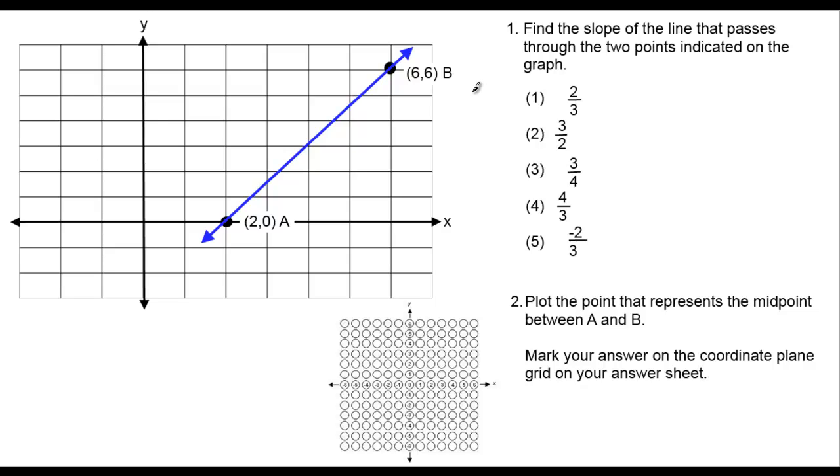Alright, this is a two-part question involving this coordinate plane here. So the first one says, find the slope of the line that passes through the two points indicated on the graph.